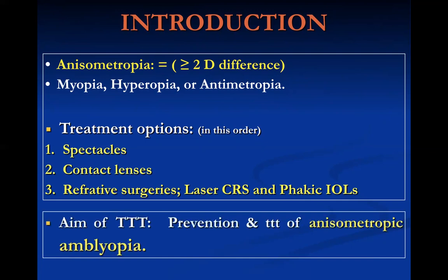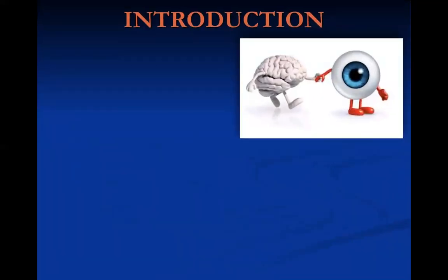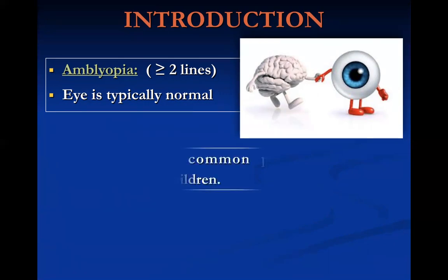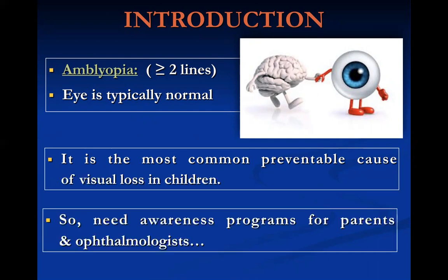The aim of treatment is the prevention and treatment of anisometropic amblyopia. Amblyopia is defined as a difference of best corrected distance visual acuity of two lines or more between both eyes, while the eye is completely normal with no pathology in the anterior or posterior segments. Amblyopia simply means that the eye and brain do not work in harmony. It is the most common preventable cause of visual loss in children, so awareness programs for both parents and ophthalmologists are very important.